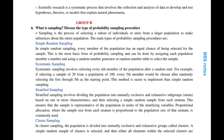In simple random sampling, every member of the population has an equal chance of being selected for the sample. This is the most basic form of probability sampling and can be done by assigning each population member a number and using a random number generator or random number table to select the sample.